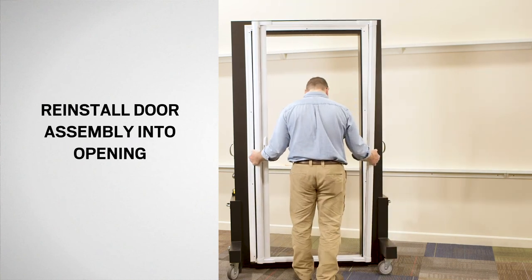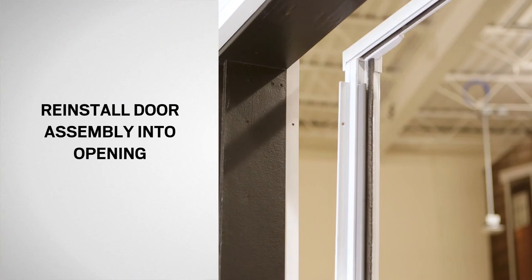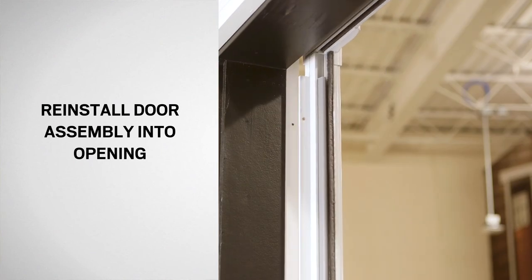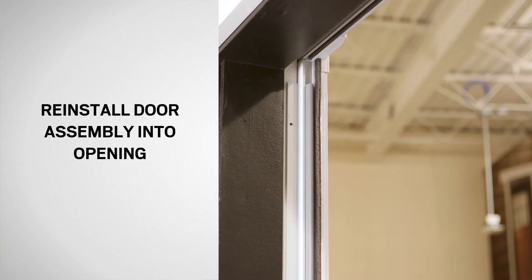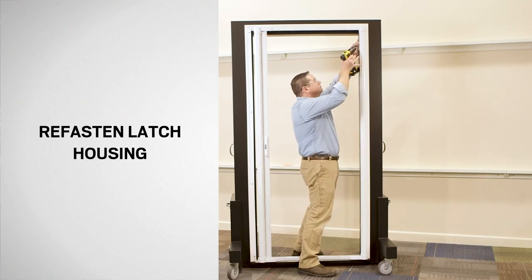Place the assembled insect screen door into the door opening. Align the holes in the latch side flange with the holes in the door frame. Secure the latch side flange with the previously removed screws.